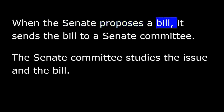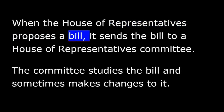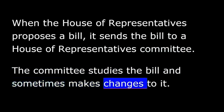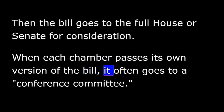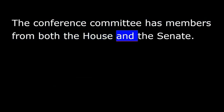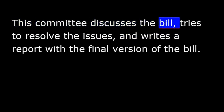When the Senate proposes a bill, it sends the bill to a Senate committee. The Senate committee studies the issue and the bill. When the House of Representatives proposes a bill, it sends the bill to a House of Representatives committee. The committee studies the bill and sometimes makes changes to it. Then the bill goes to the full House or Senate for consideration. When each chamber passes its own version of the bill, it often goes to a conference committee. The conference committee has members from both the House and the Senate. This committee discusses the bill, tries to resolve the issues, and writes a report with the final version of the bill. Then the committee sends the final version of the bill back to both houses for approval.